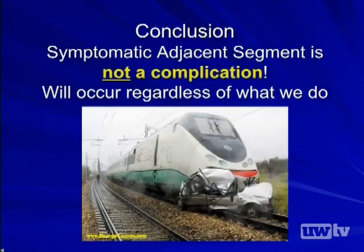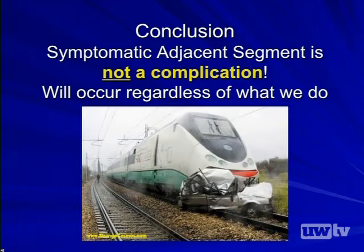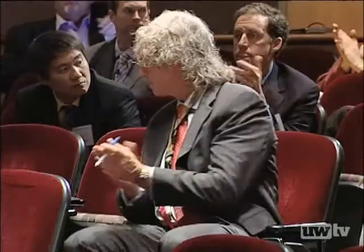It doesn't really matter what you put in that disc space or what you do to that spine. There's a genetic predilection of that individual for having a degenerative process that, regardless of what you do right now, you're not going to change. That spondylytic train is going to continue down the track regardless of whether you do a discectomy, a fusion, or an arthroplasty. I do think it's not a complication, but rather a process of continued degeneration. Thank you very much.